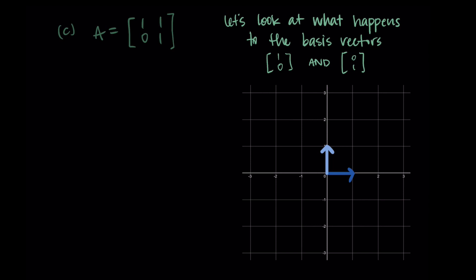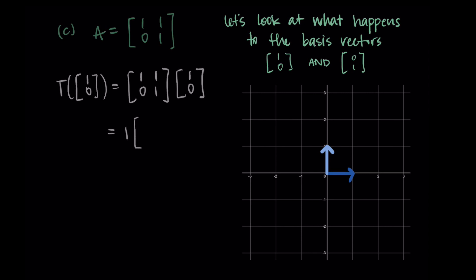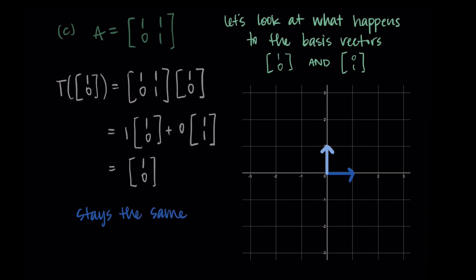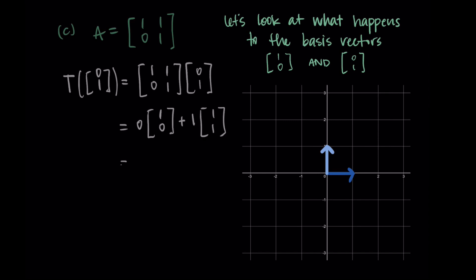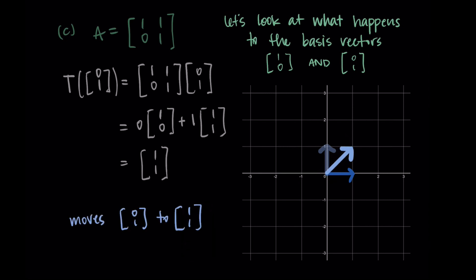Now let's look at part C. Our first column of A is (1, 0) and the second column is (1, 1). Starting with the first basis vector (1, 0): we do 1 of the first column plus 0 of the second column, and we get (1, 0) — it stayed the same. Now for the second basis vector: we do 0 of the first column plus 1 of the second column, and we get (1, 1). So this transformation moved the vector (0, 1) to the vector (1, 1) — it kind of seems like it tilted it on its side, like it fell over into this new position.